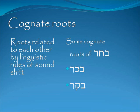In Hebrew, it's important to look at the cognate roots so we can get a broader understanding of what each word means. Cognate roots are words that are related to each other by linguistic rules of sound shift. Some of the cognate roots of 'bachar' (bet-chet-resh) are 'bachor' (bet-kof-resh) and 'bakar' (bet-kuf-resh).